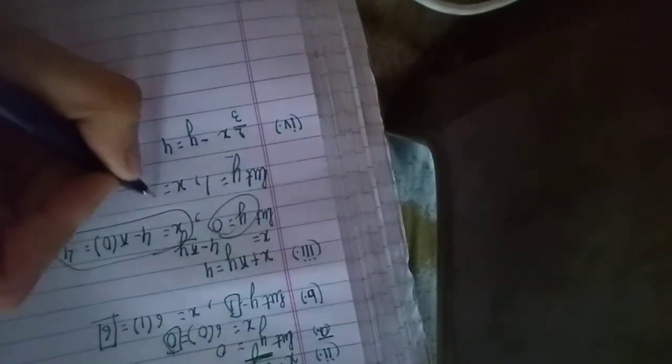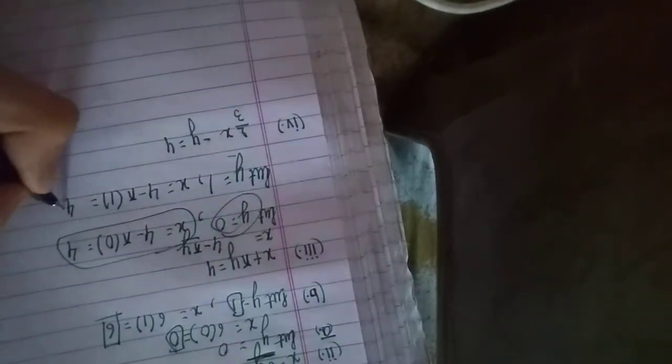Then if we put y equals 1, then x will be 4 minus π times 1, which equals 4 minus π. So these are the two solutions.